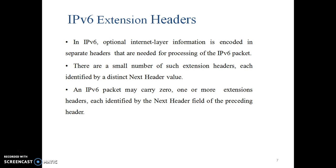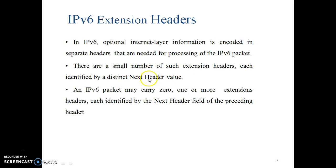Now this is the main topic of this presentation: IPv6 extension headers. In IPv6, optional internet layer information is encoded in separate headers needed for processing of the IPv6 packet. There are a small number of such extension headers, each identified by a distinct next header value. An IPv6 packet may carry zero, one, or more extension headers.